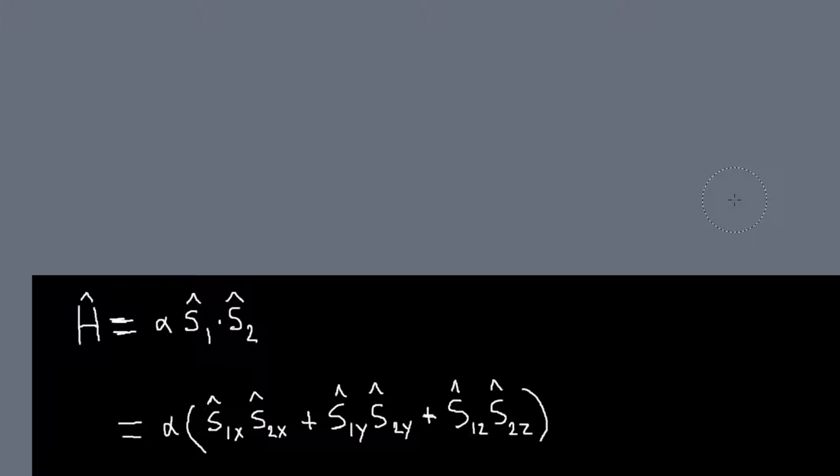In this problem we're going to look at another system for our two spin-1/2 particles. Our Hamiltonian this time is going to involve the dot product of our spin-1 operator and our spin-2 operator.